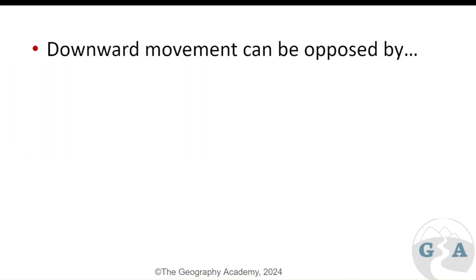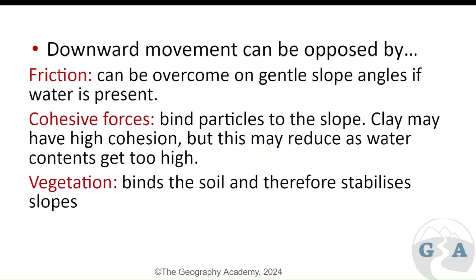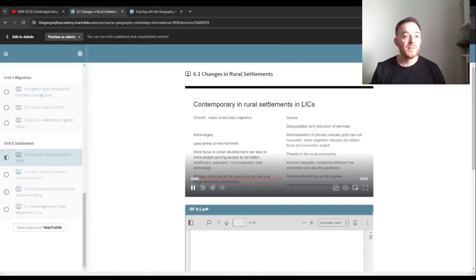These factors are really important to know and think about when studying mass movements — any of them can be used to explain why a mass movement is happening, so consider which ones apply to each particular case. Downward movement can be opposed by friction, cohesive forces, and vegetation. High cohesion, such as from clay, can bind materials together and resist movement.